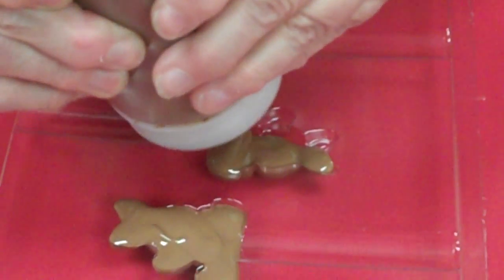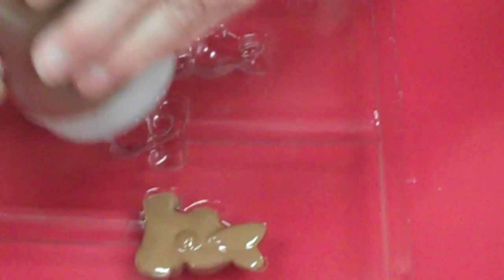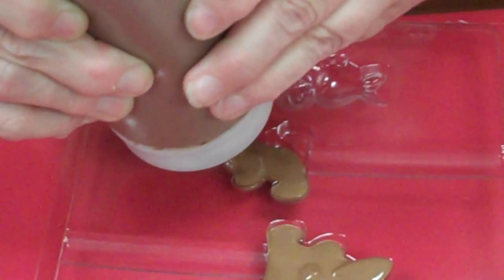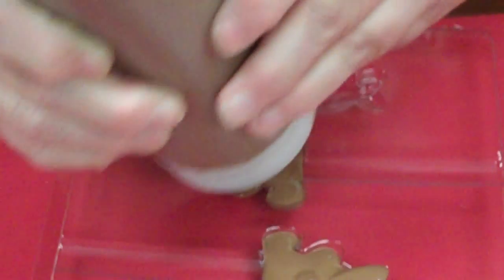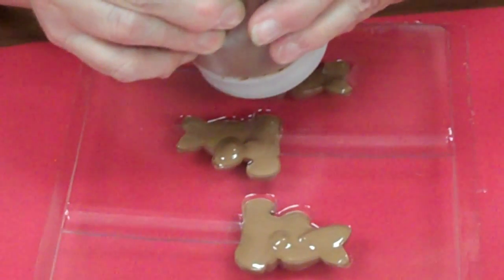Now you don't want to put too much chocolate in these. Under filling is better than over filling in the case of the pretzels. Just squeeze that right in there. Fill it up. These are done in no time at all.